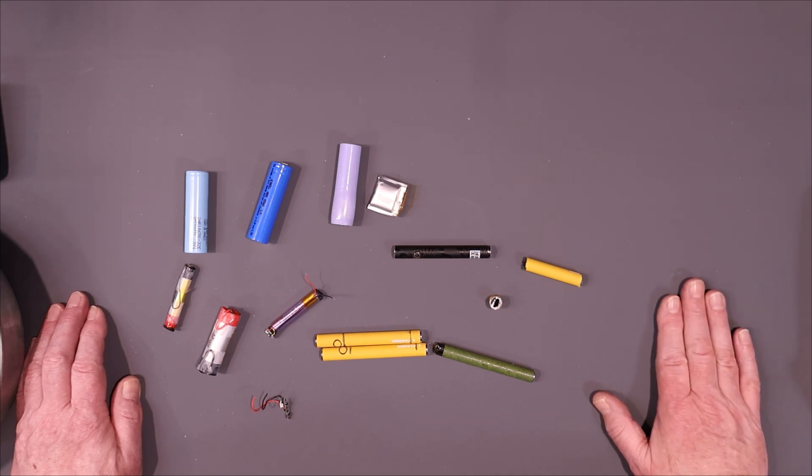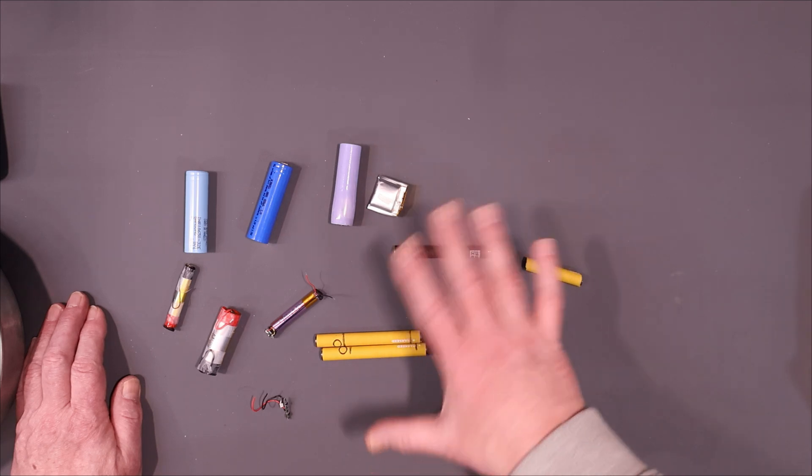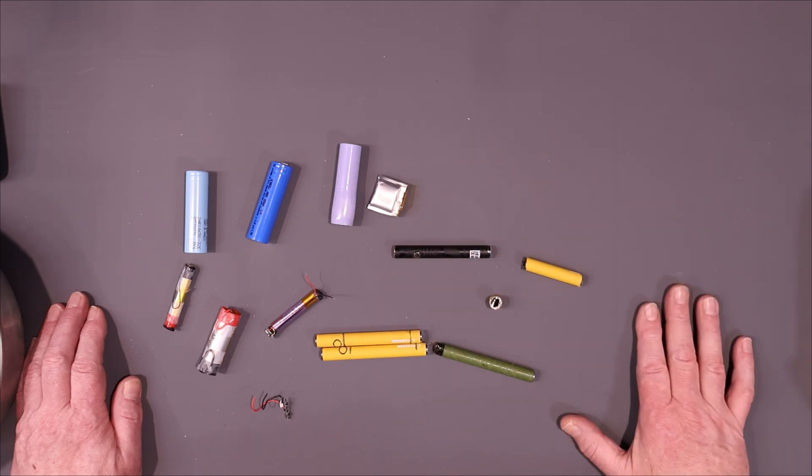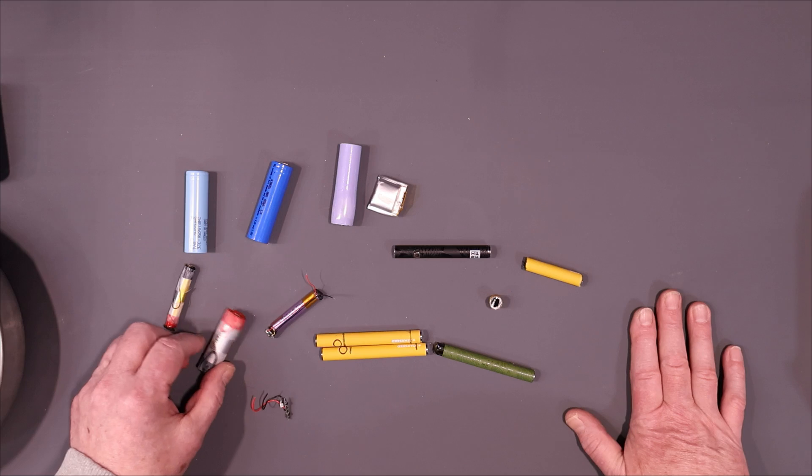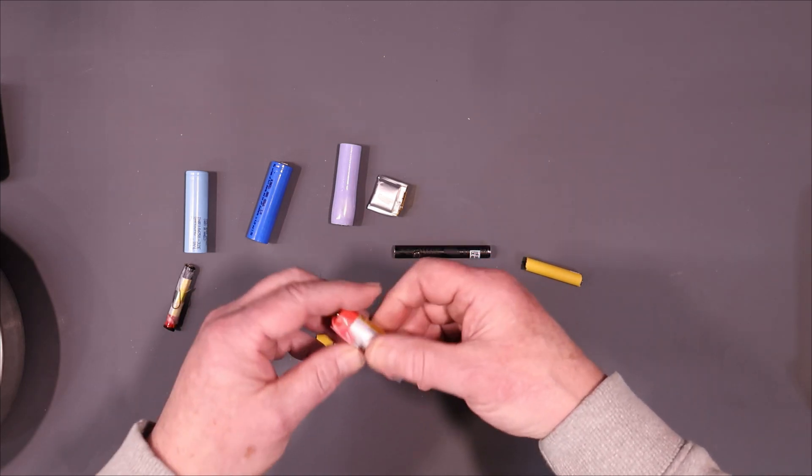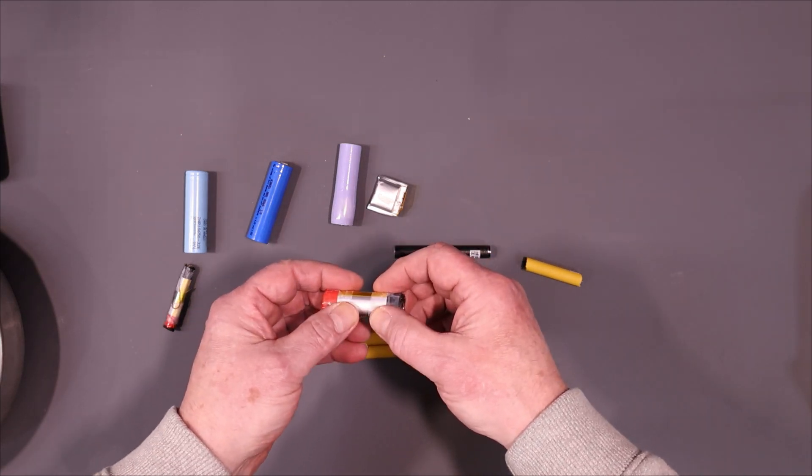I'm going to try to address the reuse component by getting lithium batteries out of things. Let's go through some of these. This is a rather chunky lithium battery. I got this out of a water pump that goes on a standard five gallon bottle.